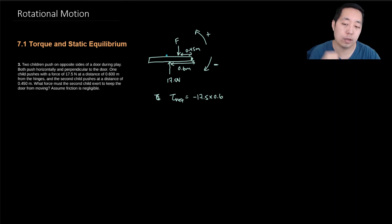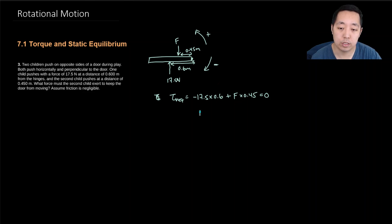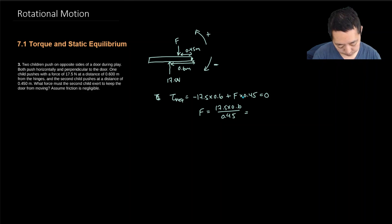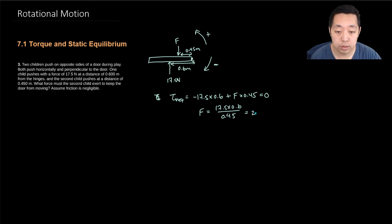If there were no opposing force, the 17.5 N force would cause the door to rotate clockwise. The other child's force causes counterclockwise rotation, so it's a positive torque: F × 0.45. Since the door isn't moving, the net torque must be zero. Solving for F: F = (17.5 × 0.6) / 0.45 = 23.3 newtons.